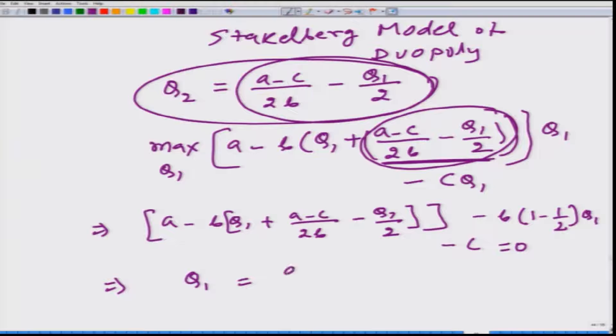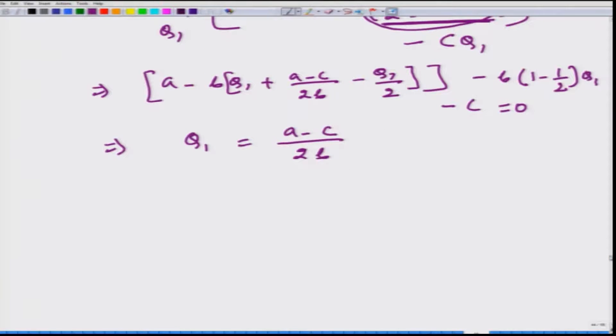Which will come out to be (A minus C) divided by 2B. And when you plug it in the formula, what you are going to get is Q2 equals (A minus C) divided by 4B.